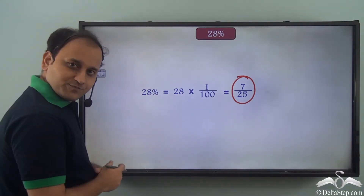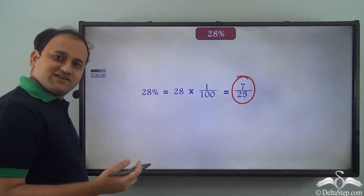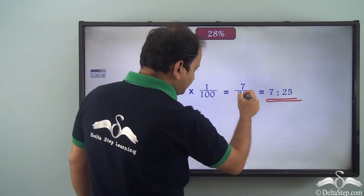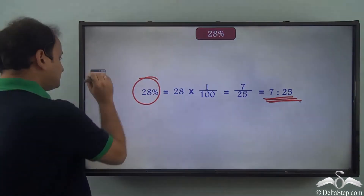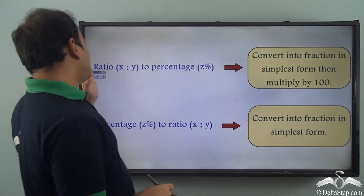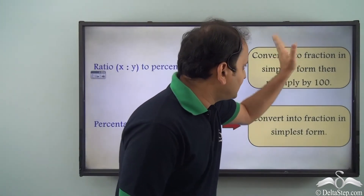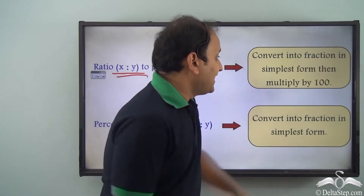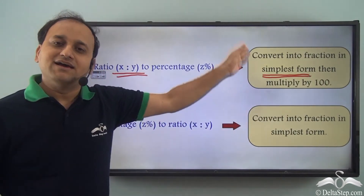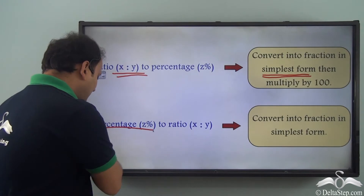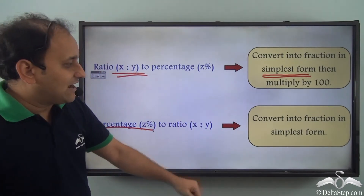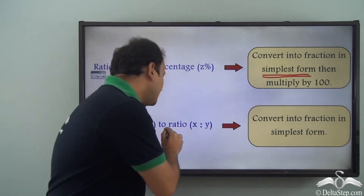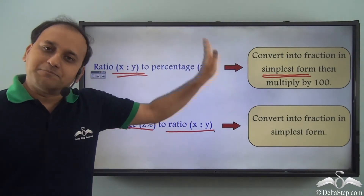Now simply this fraction can be written as a ratio: 7 is to 25. So we had this percentage value, we converted it into a fraction first, and then the fraction can be written as a ratio. To summarize: if we need to convert ratio to percentage, we convert the ratio into a fraction in simplest form and then multiply by 100. If we want to convert percentage to ratio, we convert the percentage into a fraction in simplest form, and that fraction can be written as a ratio.